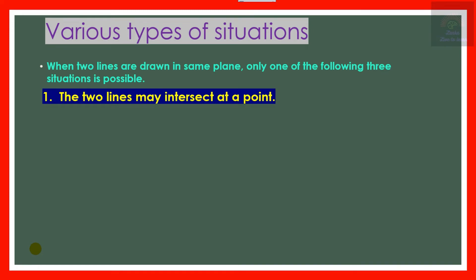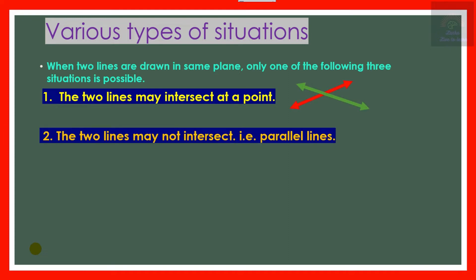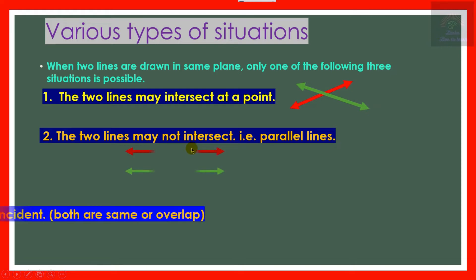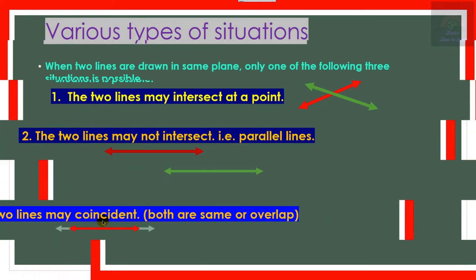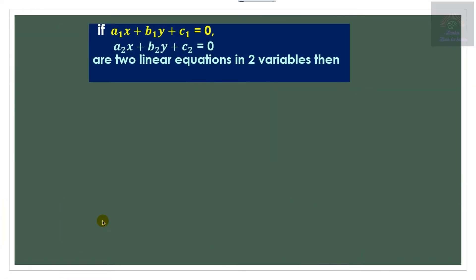We have already discussed in the previous video that there may be the condition one: the two lines may intersect at a point. We had discussed that in the first video. Now we are going to discuss the second topic — if two lines are parallel lines, that means inconsistent — and the third one: coincident or dependent, meaning they are overlapping lines. In this video we are going to discuss these second and third topics.